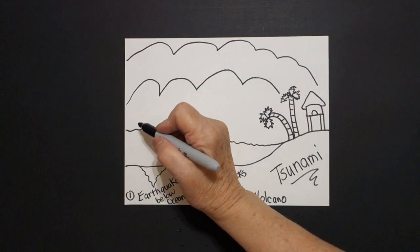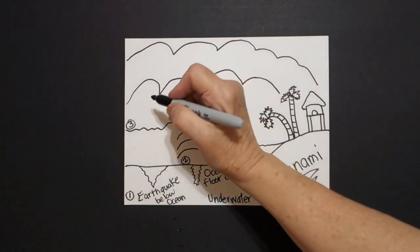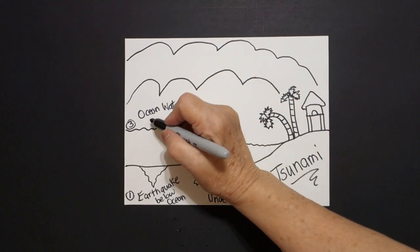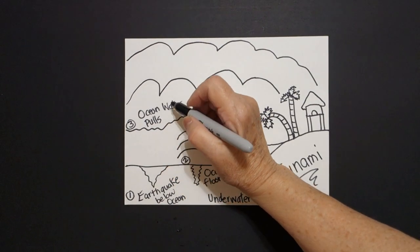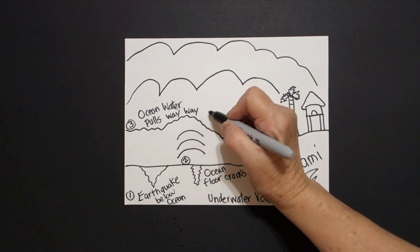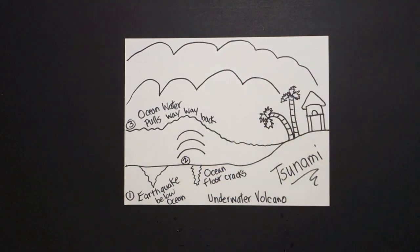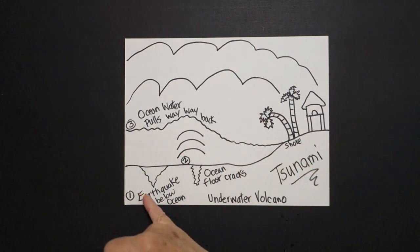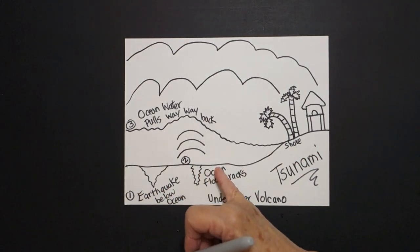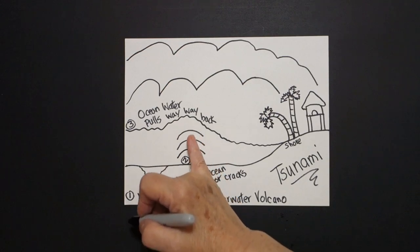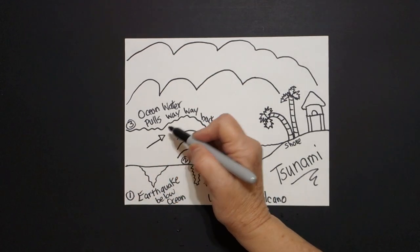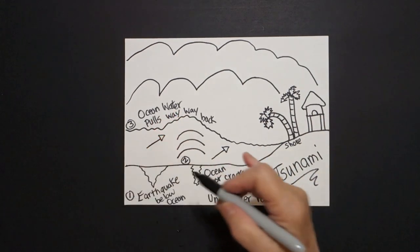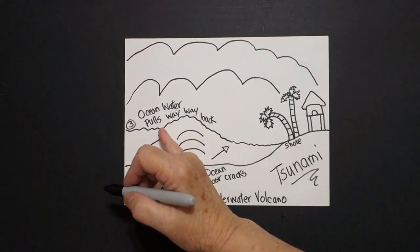Number three: once the ocean water is hit with that energy, it pulls way, way back from this part right here — the shoreline, from the shore. The earthquake hits below the ocean, the ocean floor cracks, sends out energy — straight line, triangle, straight line, triangle — which makes the ocean water pull way, way back from the shore.